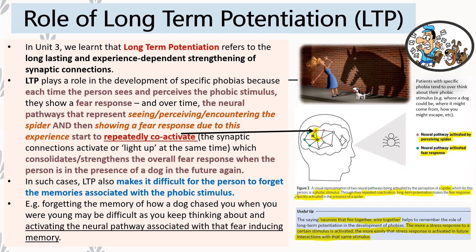This links to the principle 'neurons that fire together wire together.' The two neural pathways — perceiving the spider and feeling the fear — constantly fire together, so eventually they wire together, going from two separate pathways to one merged pathway. That's the role of long-term potentiation in specific phobia.